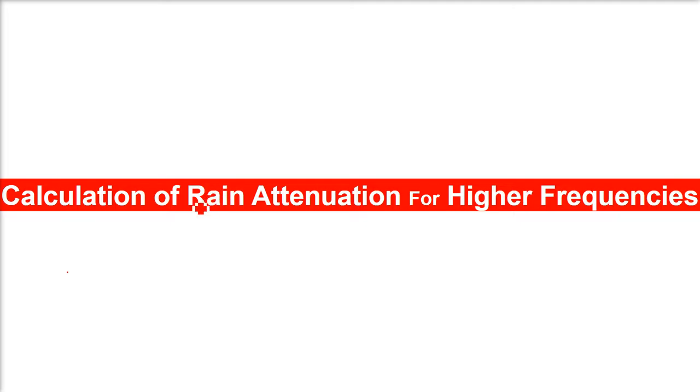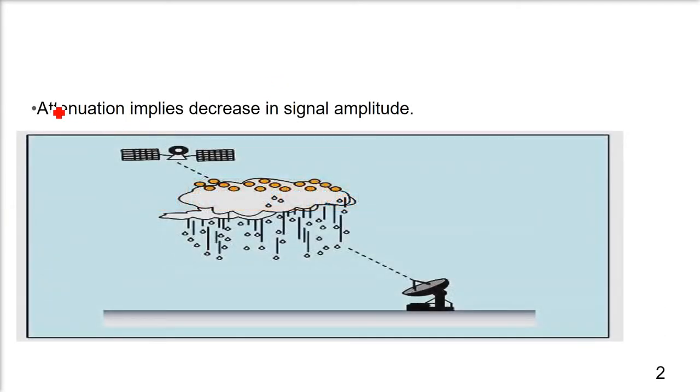Attenuation implies a decrease in signal amplitude. Whenever there is transmit or receive, there are in between the clouds. Cloud, fog, they all add up for various types of attenuation, but rain is very important because the droplets they fall.